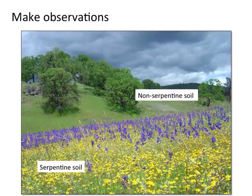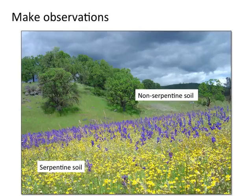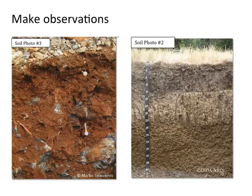We focus on serpentine and non-serpentine soils because there's a clear contrast. Serpentine soil is really low in plant-available nutrients — a hard place for plants to grow — but it supports a lot of native plant diversity and is an important part of California's biodiversity. We bring samples into the classroom and students get to smell, touch, and in some cases taste the different soils and start to think about how a plant would grow on those two soil types and make predictions.